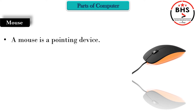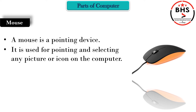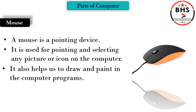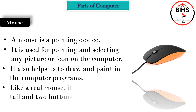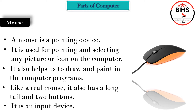A mouse is a pointing device, meaning it helps to point out at any place on the monitor screen. It shows our position on the monitor with the help of a small arrow and is used for pointing and selecting any picture or icon on the computer. Like a real mouse, it also has a long tail — that is a wire — and two buttons, as you can see in the picture. It is an input device because we enter work into the computer with the help of the mouse.